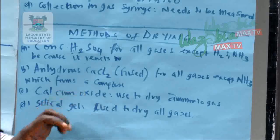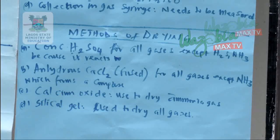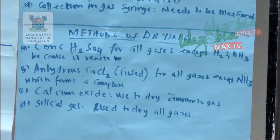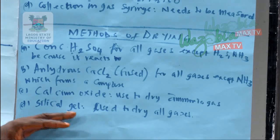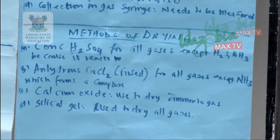Calcium oxide is also used; it dries ammonia gas and other gases as well. But silica gel is used to dry any gas you have. The silica gel is also mostly used again in a small container kept in a bag.